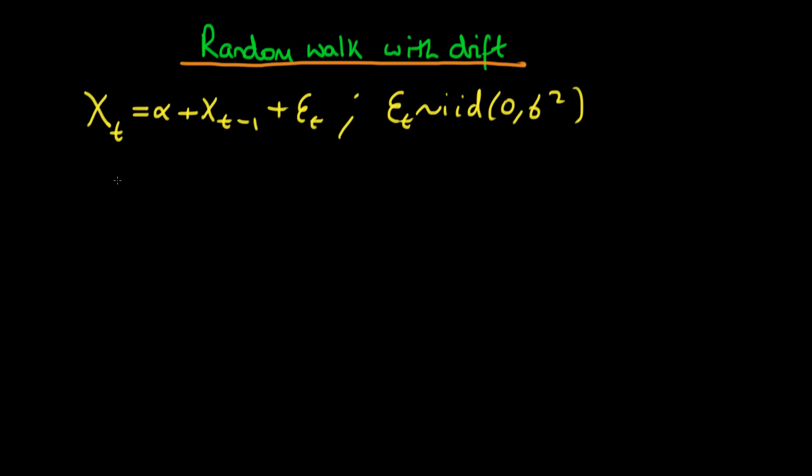So what about the properties of a random walk with drift? Well just like the same way we worked out the properties for a random walk let's use back substitution to help us derive some of those properties.